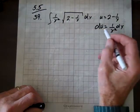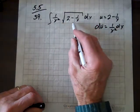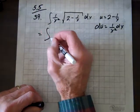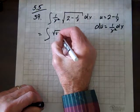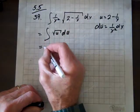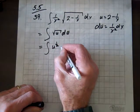So look at what we have. We've got a du here, 1 over x squared dx, and we've got a u right there. So this equals the integral of the square root of u du. And so that equals the integral of u to the one-half du.